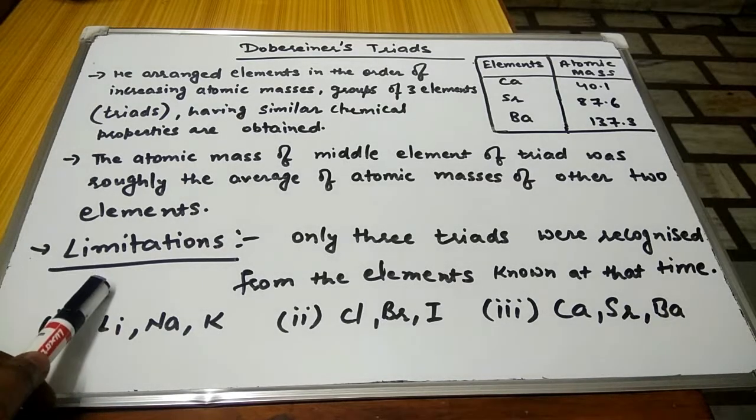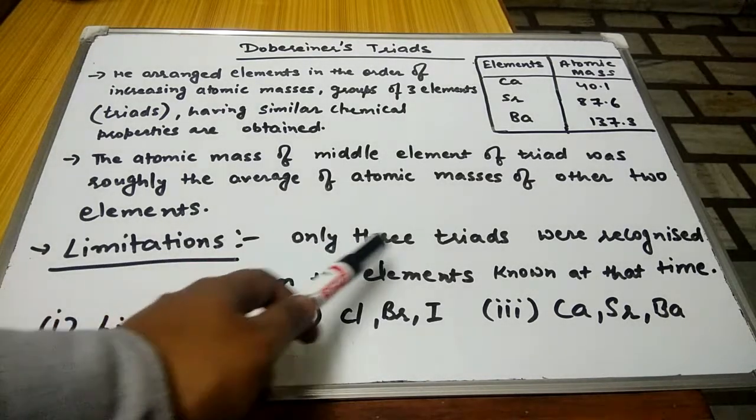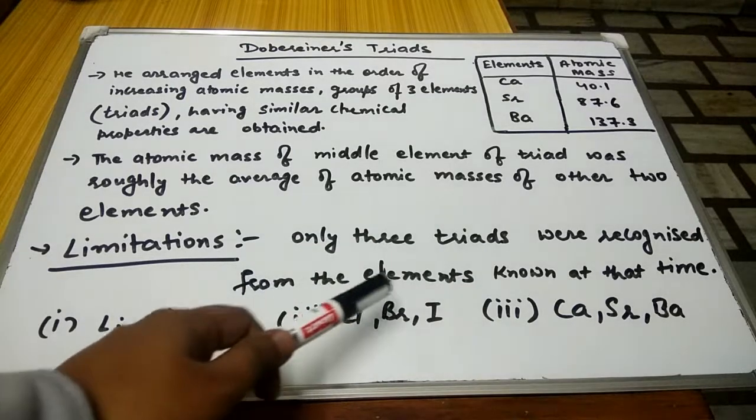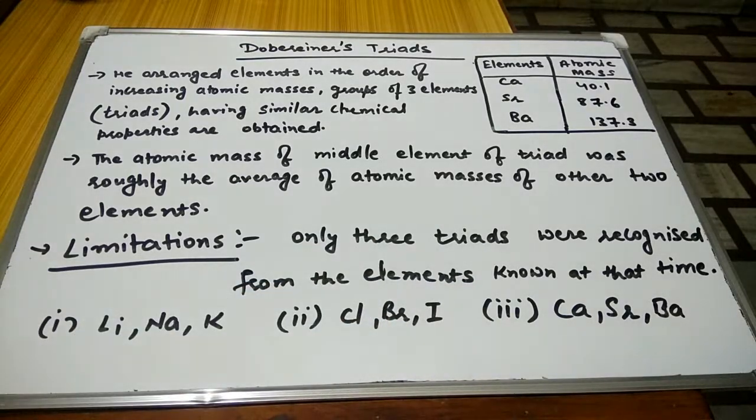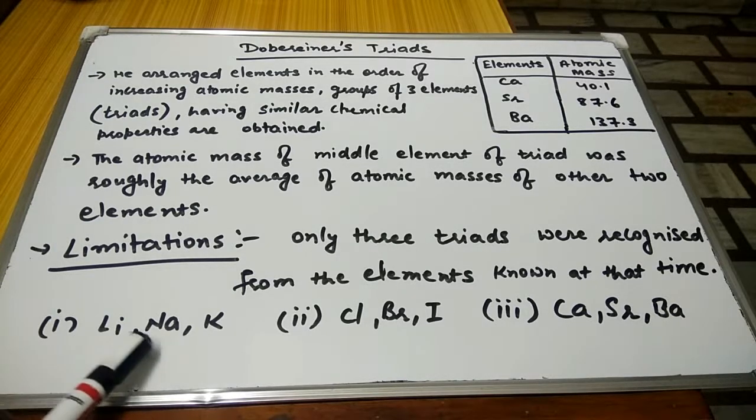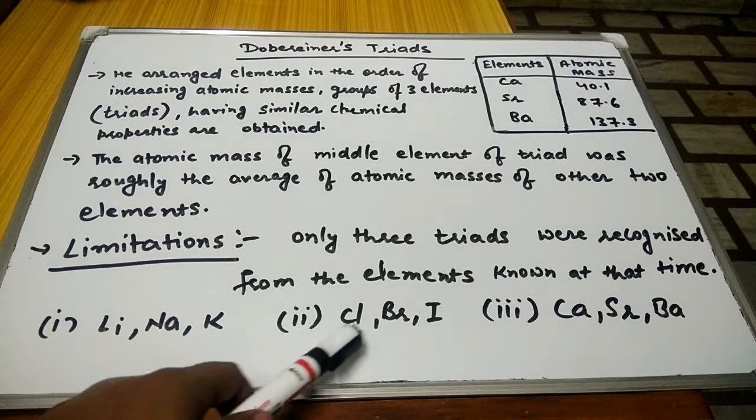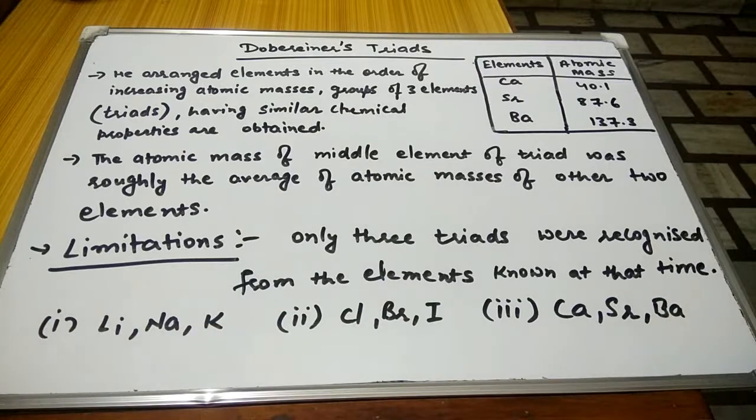So what were the limitations of Dobereiner's Triads? Only three triads were recognized from the elements known at that time. First is lithium, sodium and potassium. Second is chlorine, bromine, iodine. And the third one is calcium, strontium and barium.